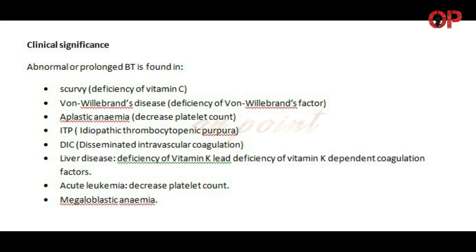Clinical significance. Abnormal or prolonged BT is found in: Scurvy — deficiency of vitamin C; Von Willebrand's disease — deficiency of von Willebrand's factor; Aplastic anemia — decreased platelet count; ITP — idiopathic thrombocytopenic purpura; DIC — disseminated intravascular coagulation; Liver disease — deficiency of vitamin K, leading to deficiency of vitamin K-dependent coagulation factors; Acute leukemia — decreased platelet count; Megaloblastic anemia.